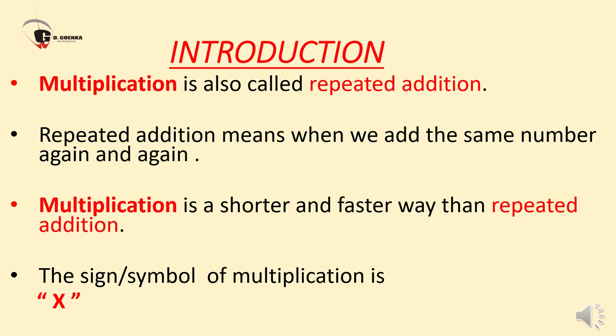Multiplication is also called repeated addition. Repeated addition means when we add the same number again and again. For example, 2 plus 2 plus 2 equals 6, and when we multiply it, we will save our time. That is, 2 multiplied by 3 is also equal to 6. So multiplication is a shorter and faster way than repeated addition.